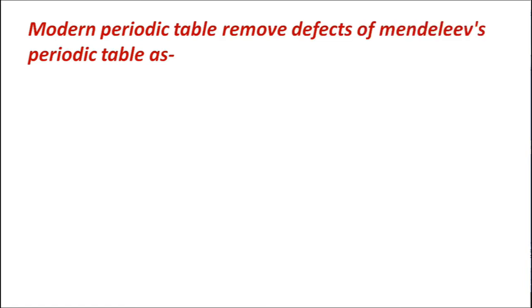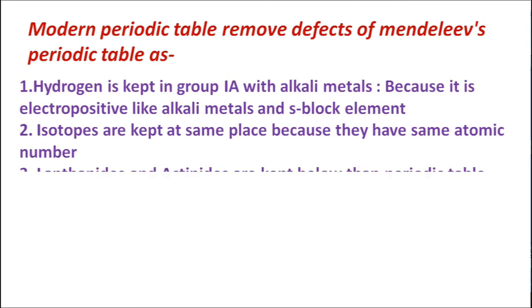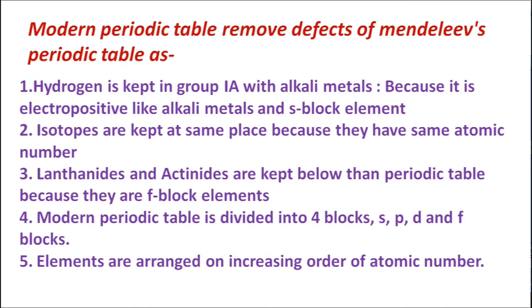The modern periodic table removes defects of Mendeleev's periodic table. Hydrogen is kept in group IA with alkali metals because it is electropositive like alkali metals and is an S-block element. Isotopes are kept at the same place because they have the same atomic number. The modern periodic table is divided into four blocks: S, P, D, and F blocks, with elements arranged in increasing order of atomic number.